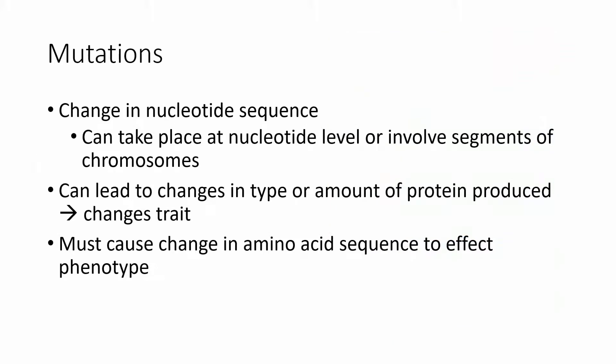So what is a mutation? A mutation is any change in nucleotide sequence, and this can happen in a couple of places — either at the level of an individual nucleotide or nitrogen base, or it can involve entire chunks of chromosomes. This can have various effects. It can change a trait, usually due to a change in the amino acid sequence of a protein being produced, or if it's in some regulatory stretch of DNA, it can change the amount of protein that's produced as well.